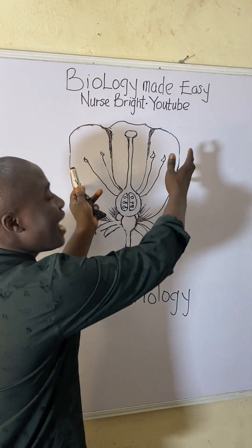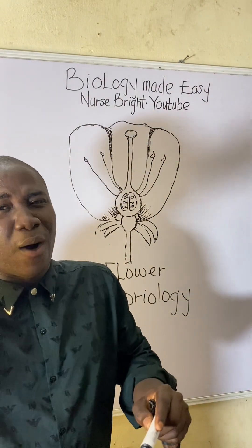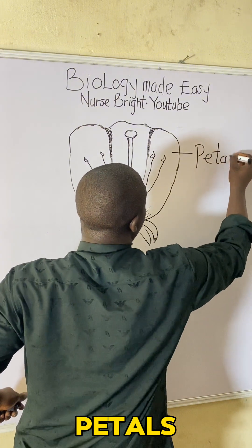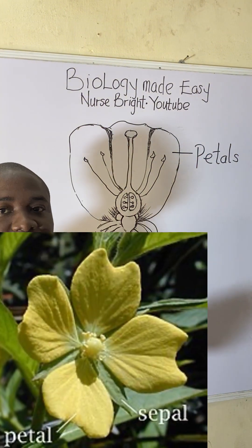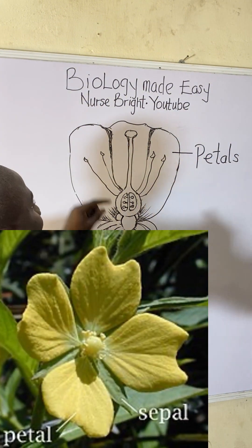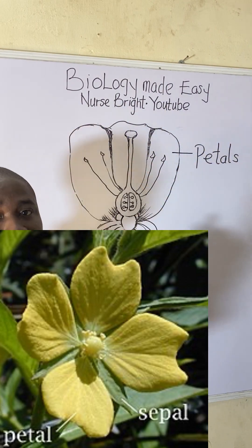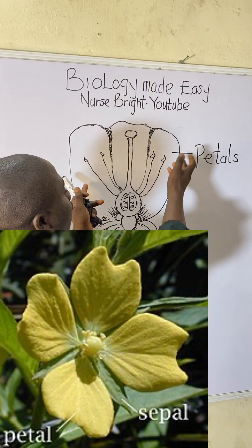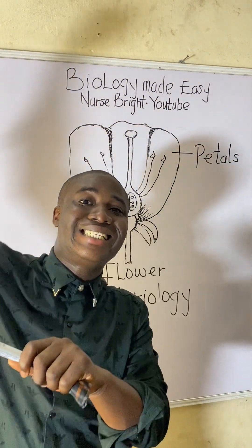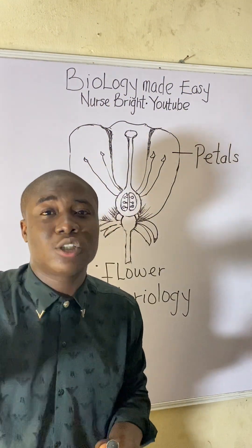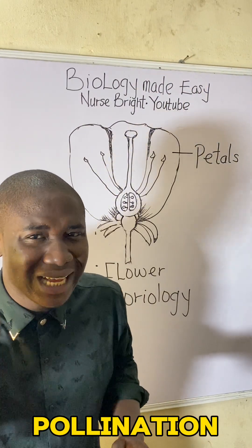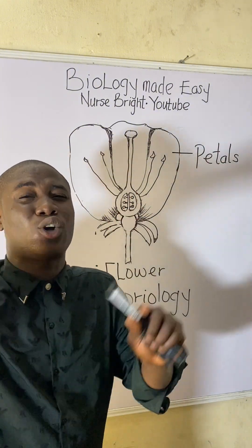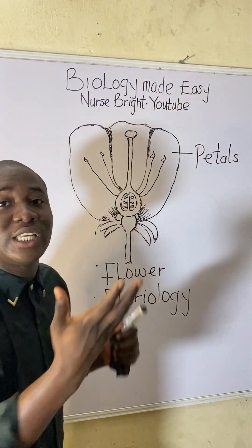This large, brightly colored part of a flower is simply called the petals. If we take a real flower, we'll see that this part is large and brightly colored. This is the part of the flower that attracts insects for a process called pollination.